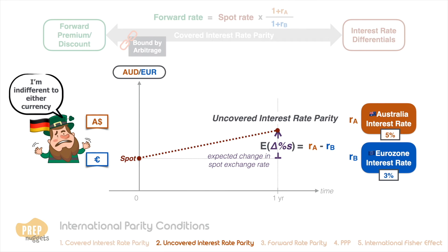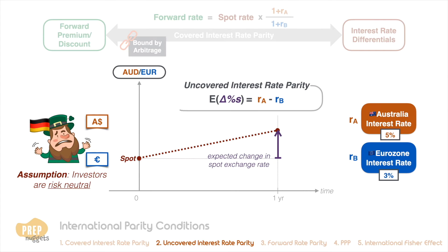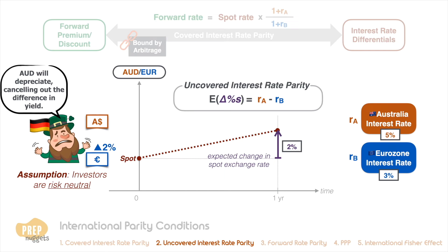This is known as uncovered interest rate parity. Uncovered means that this relationship is not bound by arbitrage; rather, it is based on the assumption of risk neutrality of investors. When the AUD interest rate is five percent and euro interest rate is three percent, the expected change in the AUD per euro rate is an increase of two percent, meaning the euro will appreciate by two percent against AUD in one year. So a risk-neutral investor will be indifferent to changing euros to AUD, as he expects AUD to depreciate, cancelling out the difference in yield.